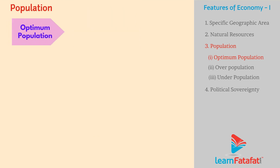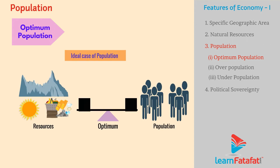Optimum Population. Optimum population is an ideal case of population in which available resources are optimum — that is, neither more nor less than required.